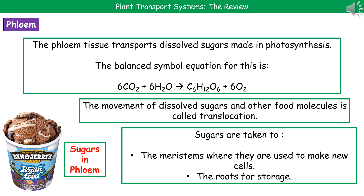The movement of dissolved sugars and other food molecules is called translocation. The key places that sugars are taken to are the meristems, which is where the plant is actually growing — this is where new cells are made — and down into the roots for storage as starch.